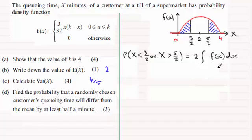That area is the integral of f of x, the probability density function, with respect to x and it's going between the limits 0 to 3 over 2.